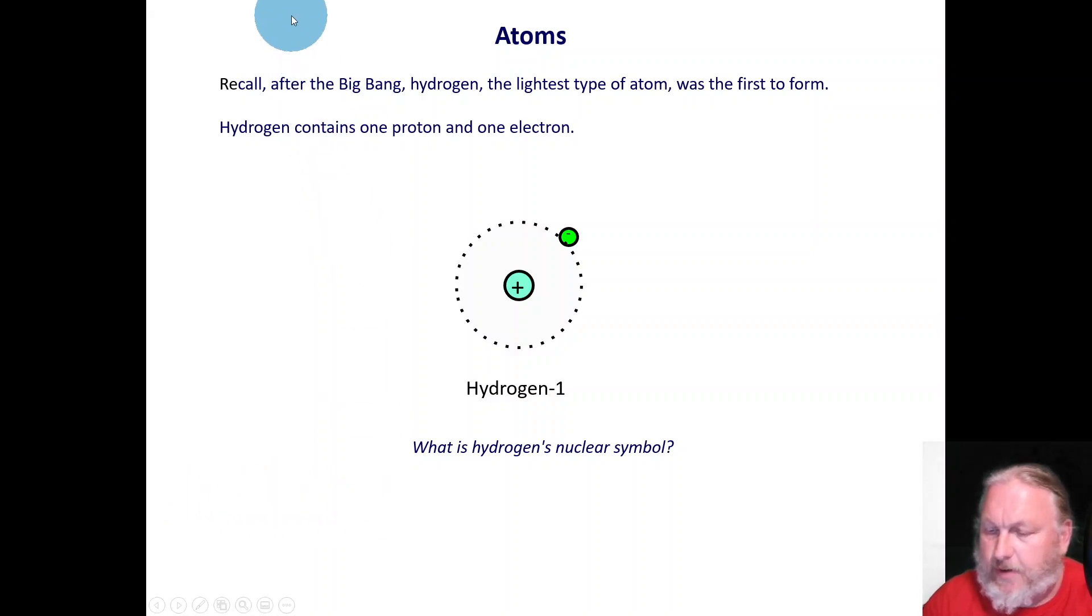If you remember, after the Big Bang, hydrogen and helium were created. Hydrogen, of course, is the lightest type of atom and was the first to form. Now, what do we know about hydrogen? Most of the isotopes contain one proton and one electron. If you look at the nuclear symbol here, hydrogen-1,